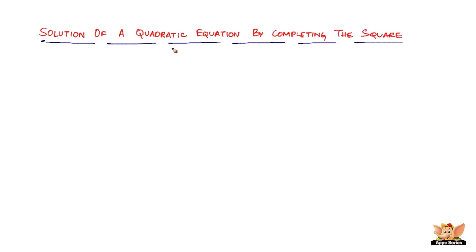In this video, let us look into finding the solution of a quadratic equation by a different method called completing the square. This video is not going to have any problems as such, but it's only going to show you the algorithm of how it's basically solved. Say we've got a quadratic equation which is ax squared plus bx plus c equals 0.